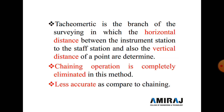In tacheometric surveying, the chaining operation is completely eliminated. We use a measuring tape only for small measurements, but chaining is not required for finding the horizontal distance between two points. This method is less accurate compared to chaining, because a small mistake in measuring the horizontal or vertical angle results in a big error in the measurement of horizontal as well as vertical distance.